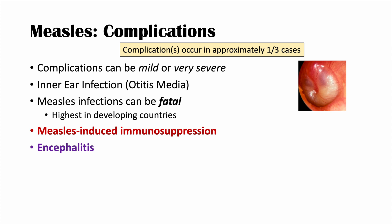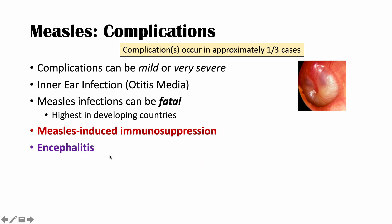Encephalitis is also a major complication of measles, estimated to occur in as many as one in one thousand measles infections. Encephalitis is an inflammation of the brain. Individuals can get a headache, fever, and altered mental status, and this usually occurs within a few days of the rash itself. They can also have symptoms like vomiting, stiff neck, and drowsiness.